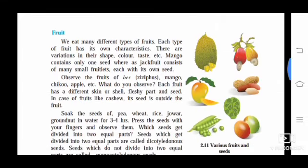Next is fruits. We eat many different types of fruits. Each type has its own characteristics. There are variations in their shape, color, taste, etc. Mango contains only one seed, whereas jackfruit consists of many small fruitlets, each with its own seed. Meaning, fruits have different kinds of seeds. Observe the fruits of ber (ziziphus), mango, chikoo, apple. Each fruit has a different skin or shell, fleshy part, and seed. In the case of fruits like cashew, its seed is outside the fruit. You can observe the right-hand side figure - it is a cashew fruit, and the cashew seed is outside of the fruit.